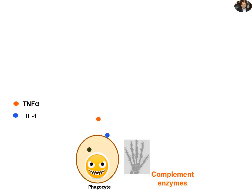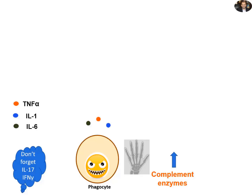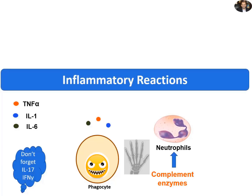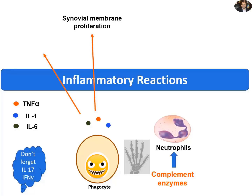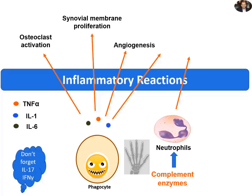Phagocytes also secrete IL-1 and IL-6. We also have IL-17 and interferon gamma produced by T cells. Additionally, complement enzymes activate the neutrophils in the joint synovial fluids. Cytokines stimulate synovial membrane proliferation and swelling, which is a remarkable pathological sign of rheumatoid arthritis. They also activate osteoclast cells, which induce bone erosions. Angiogenesis is also stimulated by the cytokines. Together, cytokines released by activated macrophages and neutrophils induce the production of protease and collagenase enzymes, which progressively erode and destroy the cartilage layer of the joints.